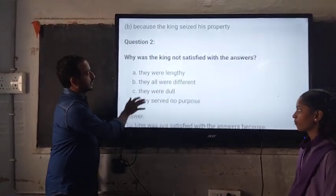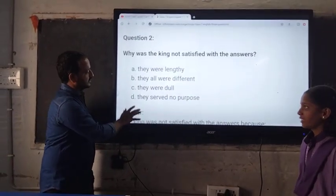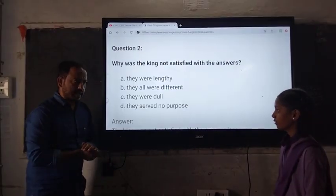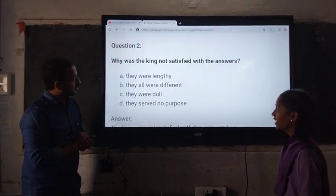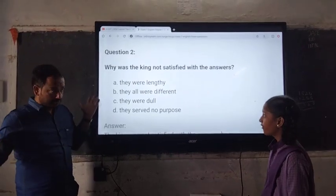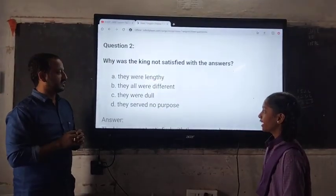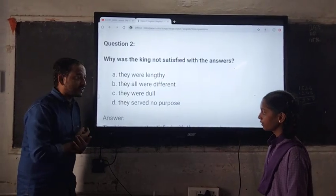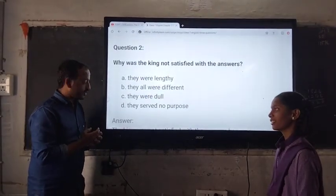Great answer. Now the second question goes to our loyal Lasia. Sir. Are you ready? Yes sir. Okay. The question reads: Why was the king not satisfied with the answers? Can you read the options? A. They were lazy. B. They were all different. C. They were all dull. D. They served no purpose. What is the right answer? B. They were all different. Are you sure? Wonderful. Claps.